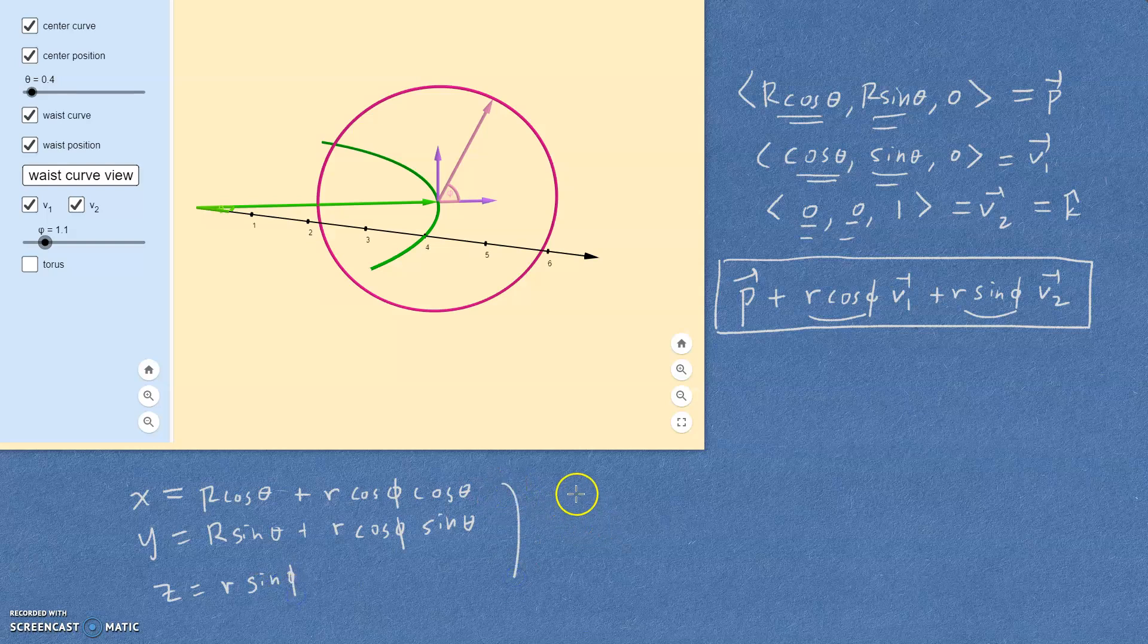Notice that what this does is it takes two numbers, theta and phi, and produces from those two numbers, three numbers x, y, and z. And that's exactly how you parameterize a surface.